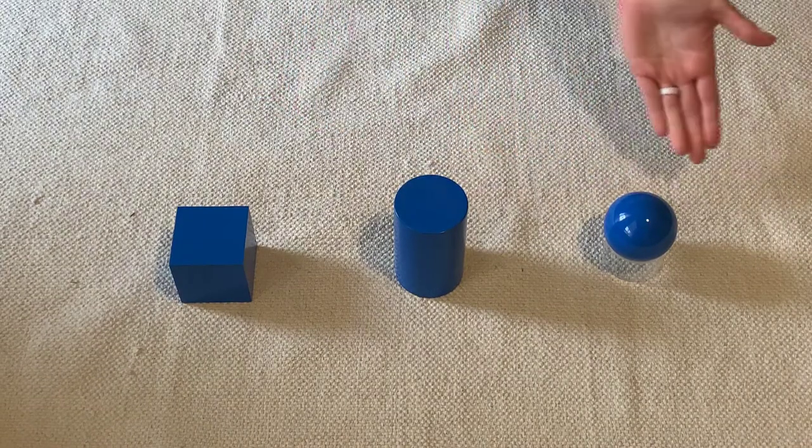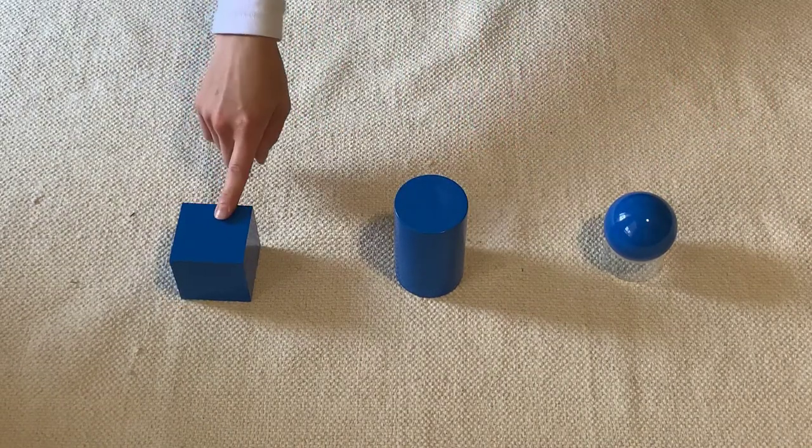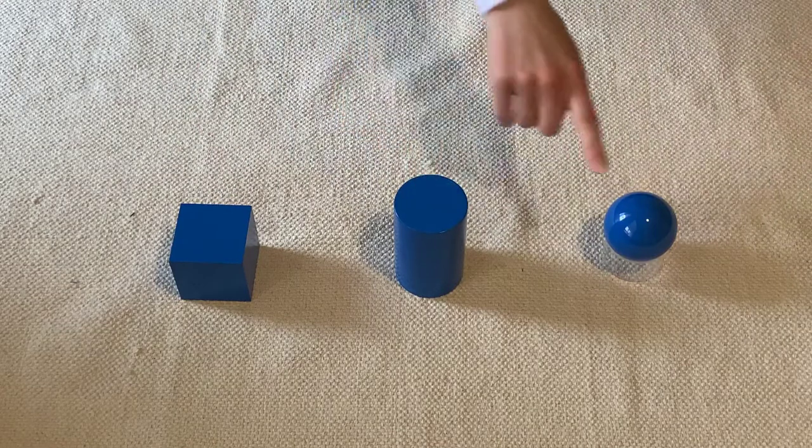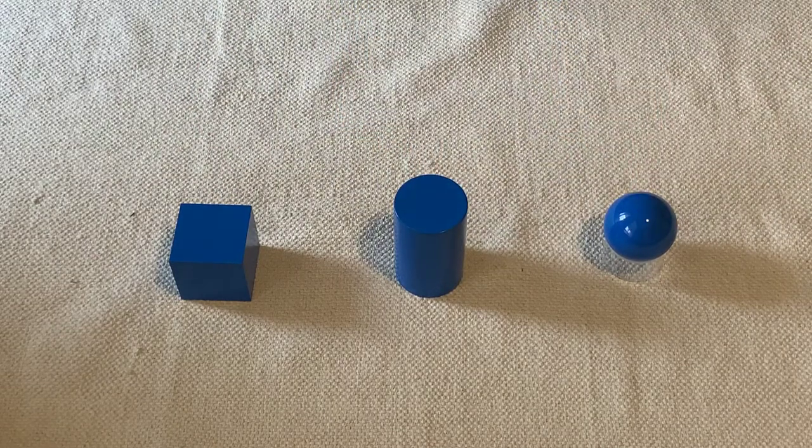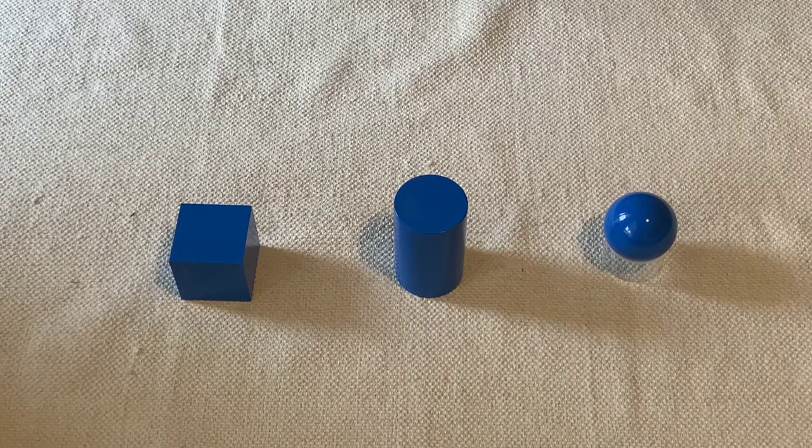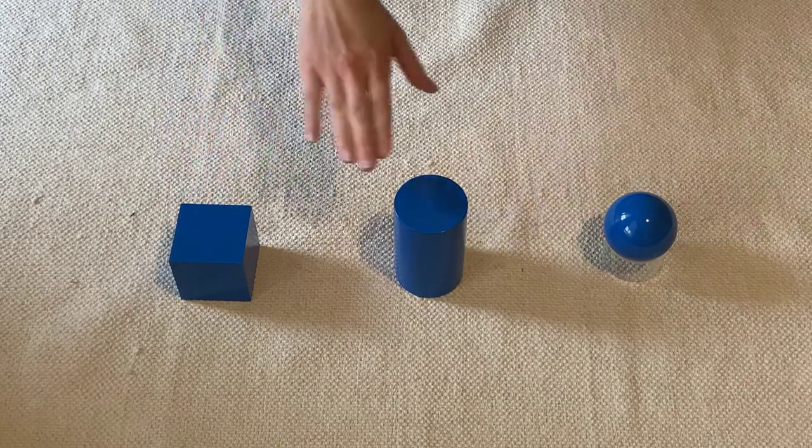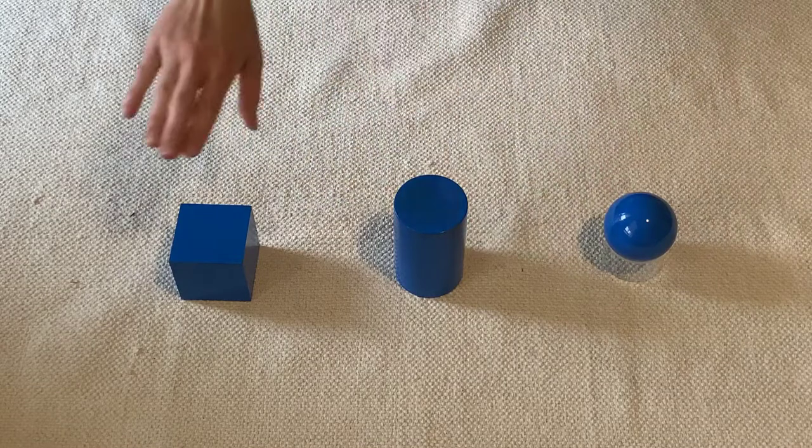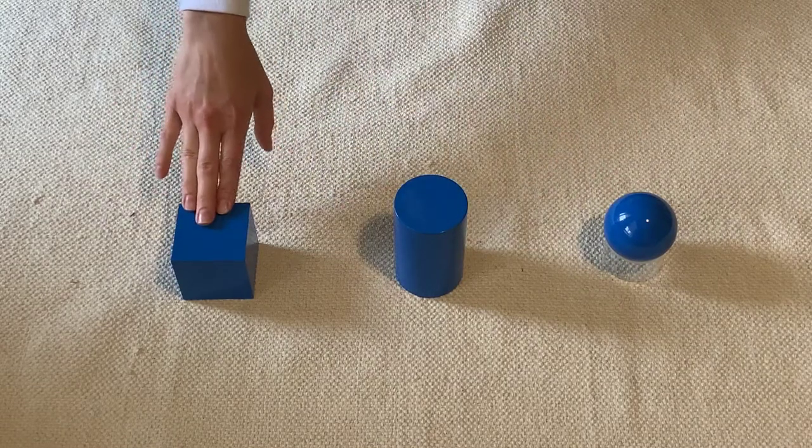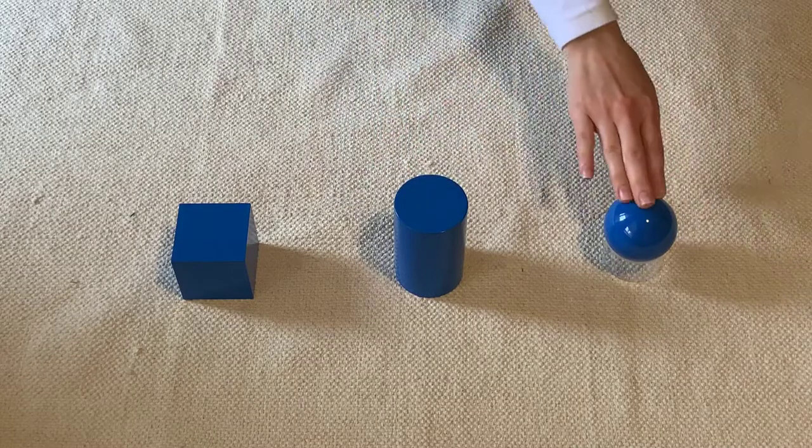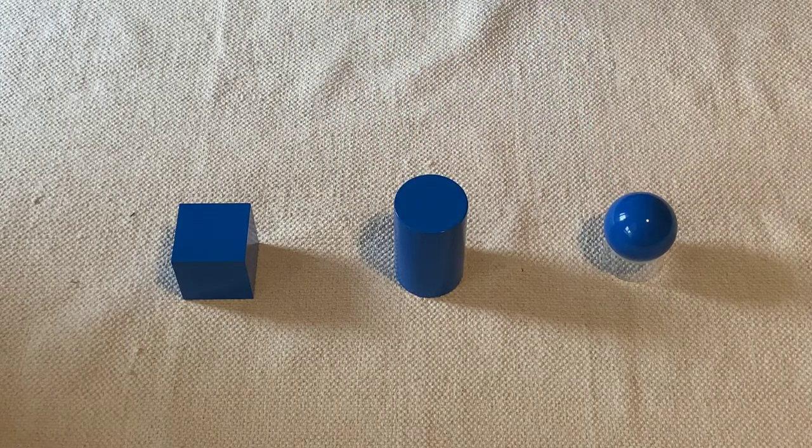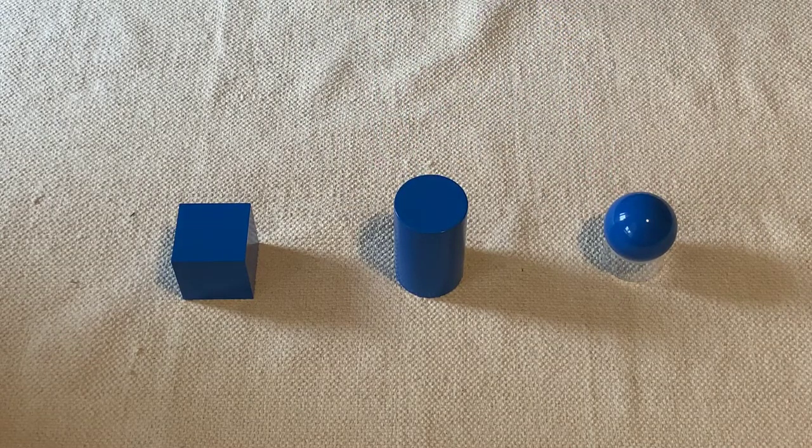Now that we've learned the names of these shapes—the cube, cylinder, and sphere—what I would like you to do is go look around your house and see if you can find one object in each of these shapes. So one object that's shaped like a cube, one object that's shaped like a cylinder, and one object that's shaped like a sphere. And let me show you what I found in my house.